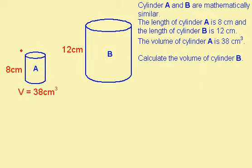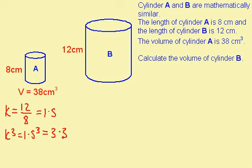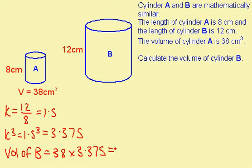I'm told that these two shapes are similar and I'm asked to find the volume of this one. I'm going to begin by finding the linear scale factor. This is 12 divided by 8, which gives me 1.5. k³ is 1.5 cubed, which is 3.375. I know that to find this volume I need to do this multiplied by 3.375. So the volume of B is 38 times 3.375, which gives me 128.25 cm³.